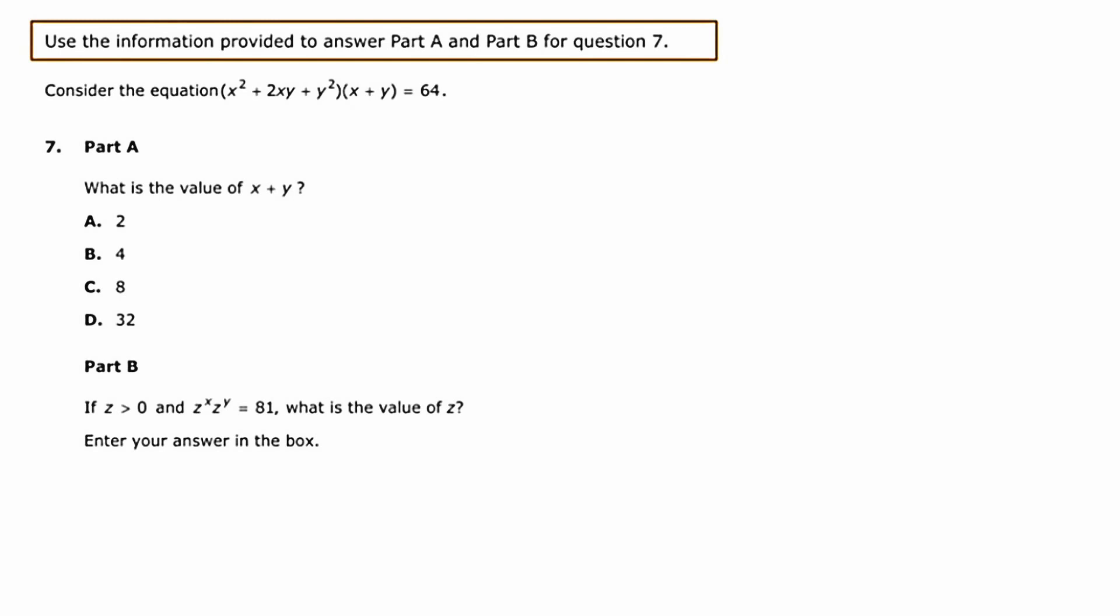What's interesting about this particular two-part question is that the answer to A is required to get the answer correct for part B. It asks us to consider the equation x squared plus 2xy plus y squared times x plus y equals 64. And part A says, what is the value of x plus y?